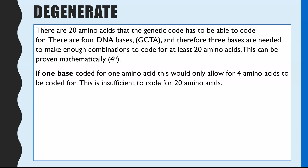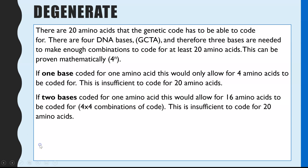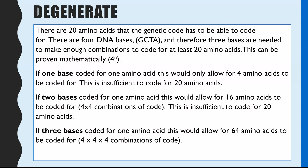If the genetic code was just one base coding for one amino acid, that would be four to the power of one — only four possible combinations, meaning you could only code for four amino acids, which is insufficient to code for 20. If it was two bases in the code, that would be four to the power of two, giving us 16 possible combinations — again insufficient to provide 20 codes for amino acids. Finally, if we get to three bases, that would be four to the power of three, which is 64. So with four possible bases and combinations of three, you can come up with 64 different codes — more than enough to code for all 20 amino acids.